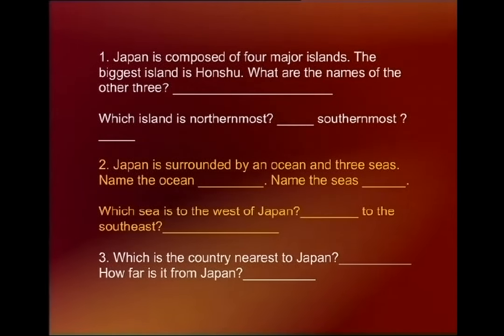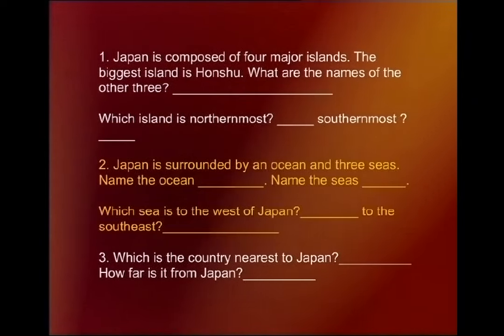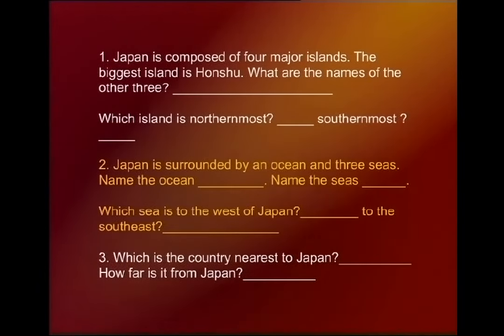Which island is northernmost — that is, which island is to the north? The northernmost island is Hokkaido. And the southernmost is Kyushu.